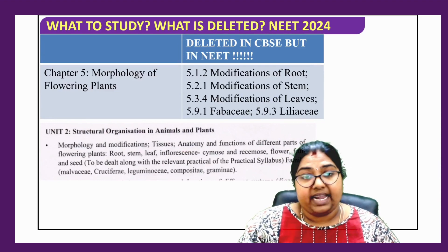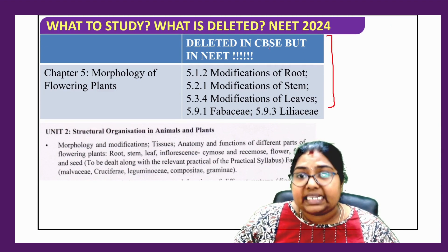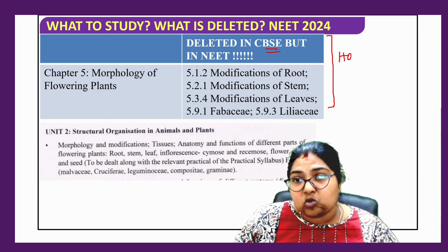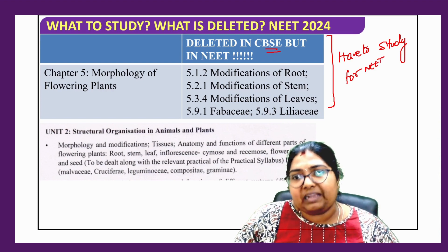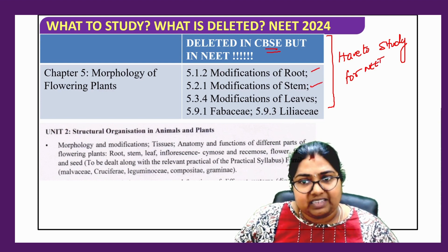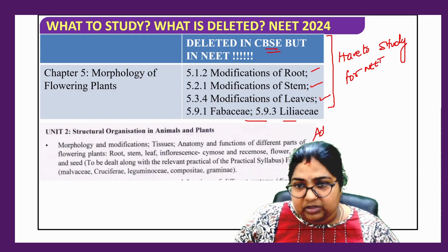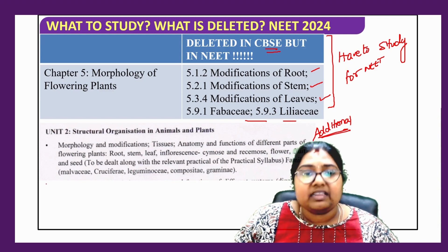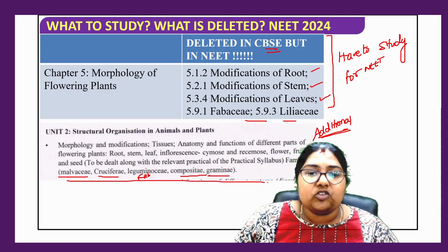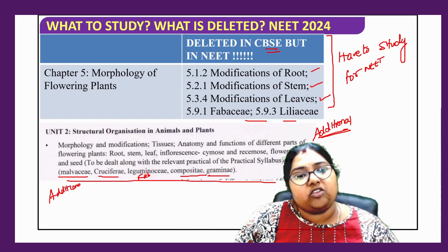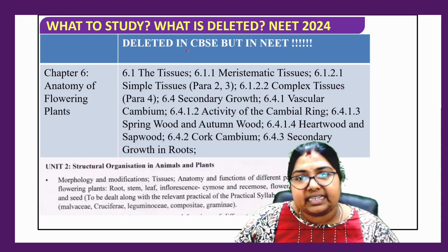Under the morphology of flowering plants, there is a major difference: some topics are deleted in CBSE but remember, in NEET you have to study them. These include modifications of the root, modifications of the stem, modifications of the leaf, and families like Fabaceae and Liliaceae — these are still there in NEET. Additionally, beyond the CBSE syllabus, Malvaceae, Cruciferaceae, Compositae, and Graminae are additional families included only in NEET.